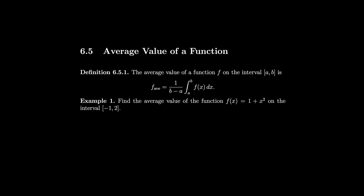Section 6.5: average value of a function. Remember that to take an average, we add up all the numbers we want to take the average of and divide by how many numbers there are. So if we had a whole bunch of y values, like y1 plus y2, all the way up to yn, we would divide by n and that would give us the average of all those y values.